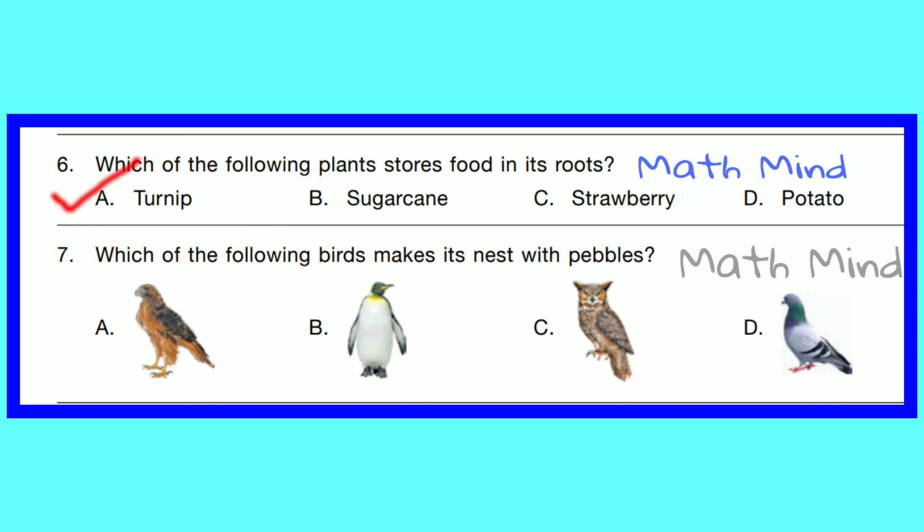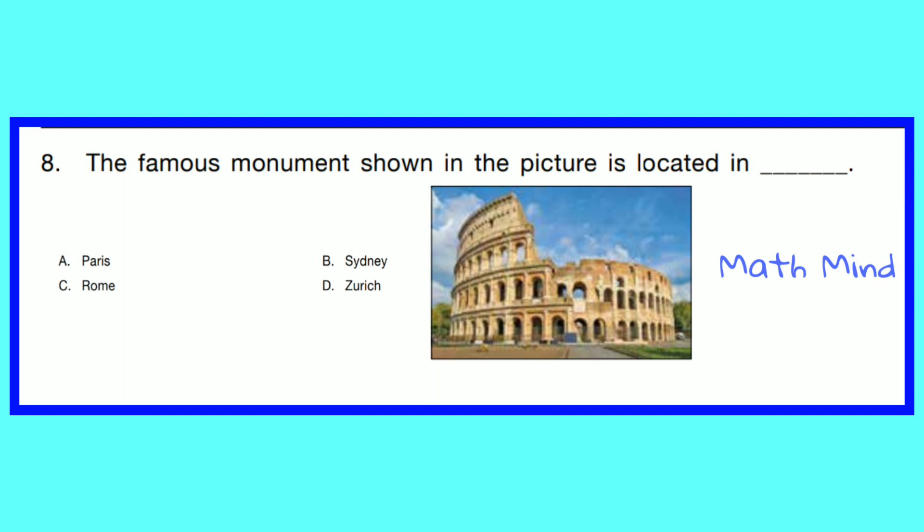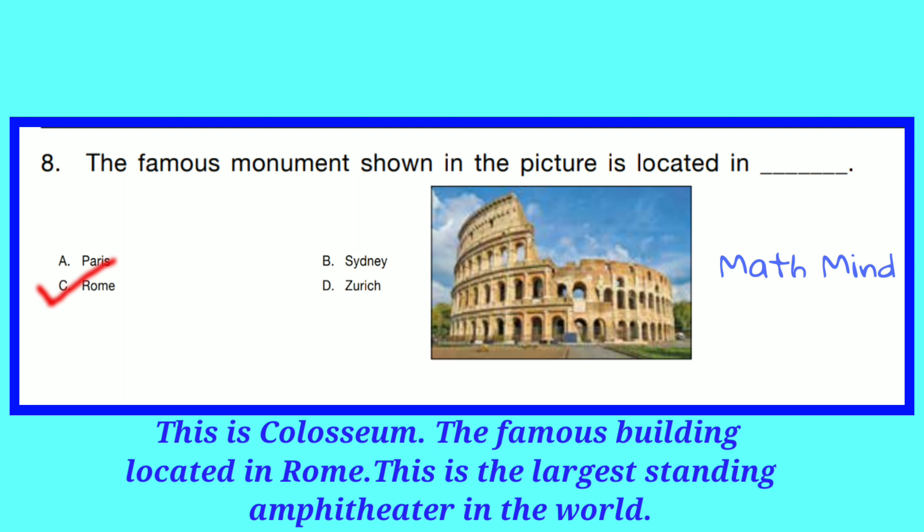Question No. 7. Which of the following birds makes its nest with pebbles? Option B is correct — Penguin. Question No. 8. The famous monument shown in the picture is located in — this is the Colosseum, the famous building located in Rome. It is the largest standing amphitheater in the world.